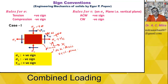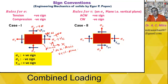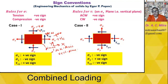Now check the sign conventions for a second example. The answer: σ_x is negative because it is in compression; σ_y is positive because it is in tension; and on the x-plane, τ_xy is rotating in the clockwise direction, so it is negative. This is a very important concept.